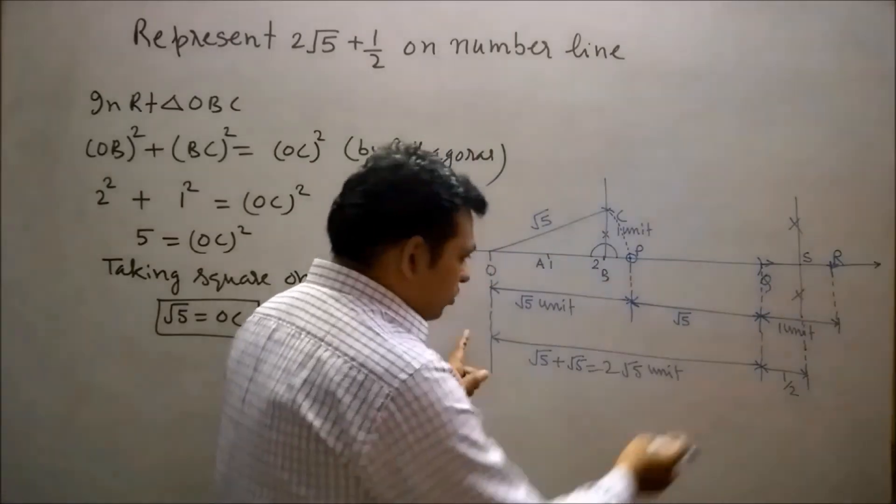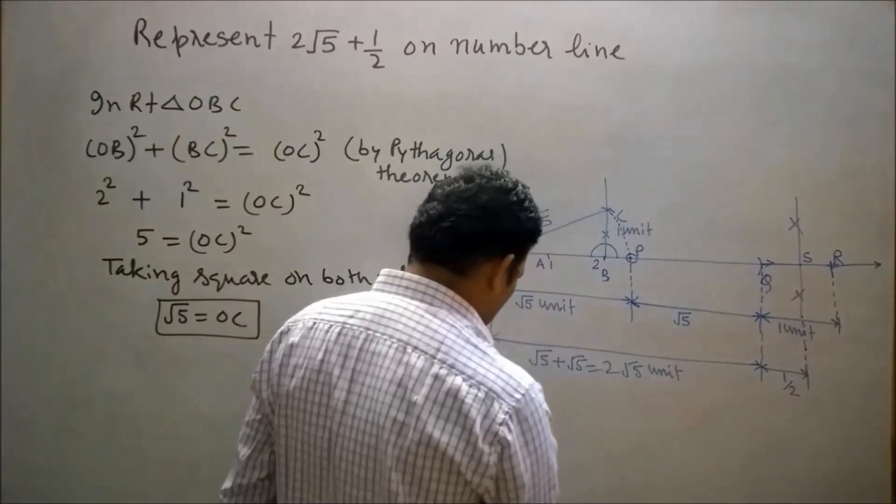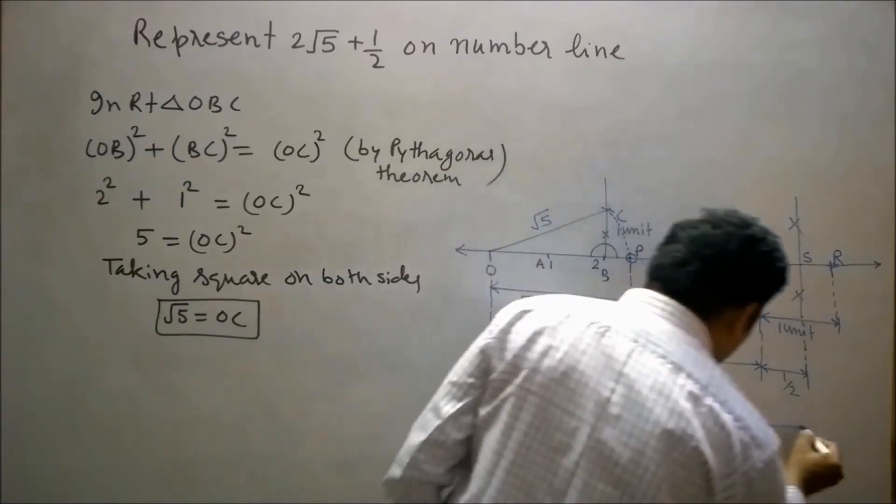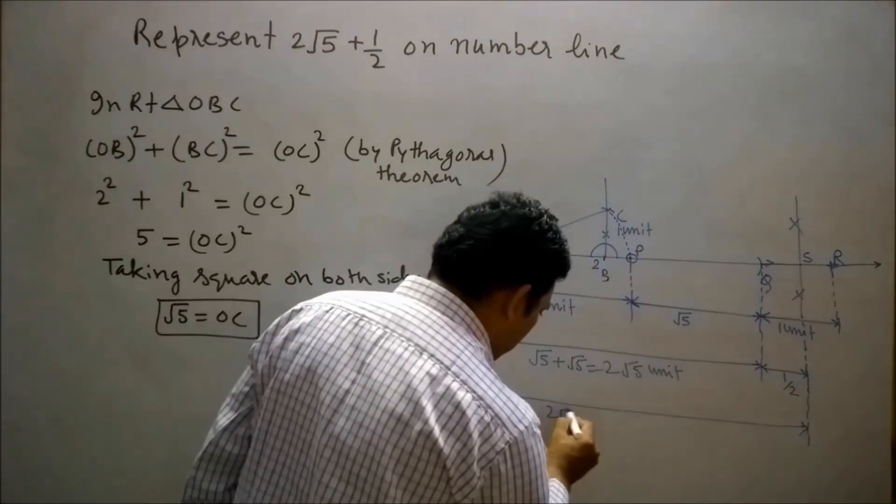So OQ plus QS equals 2√5 plus 1/2. Therefore, OS will equal 2√5 + 1/2.